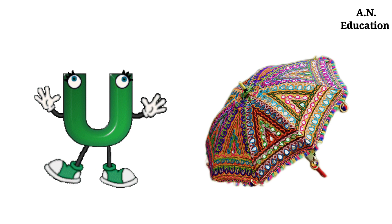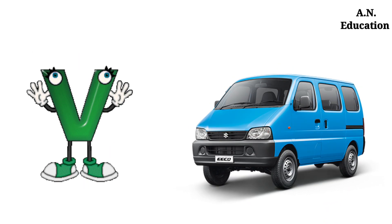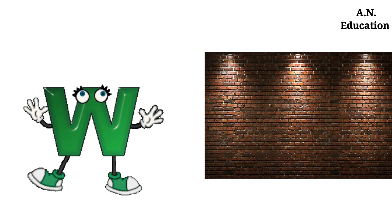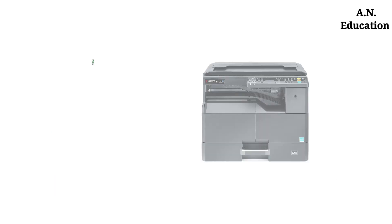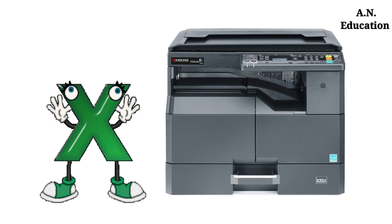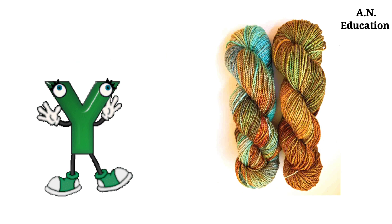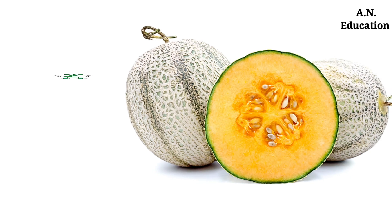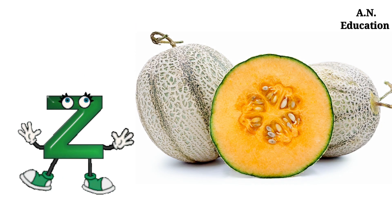U for umbrella, V for van, W for wall, X for yellow, Y for yarn, Z for zebra fruit.